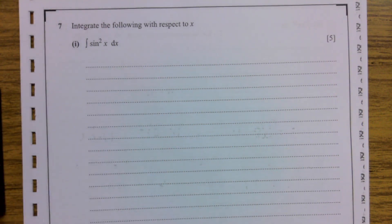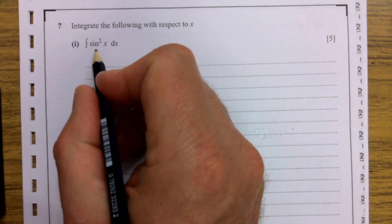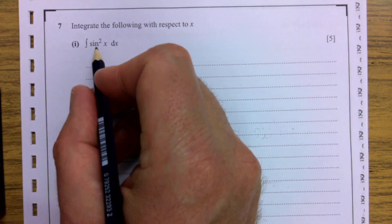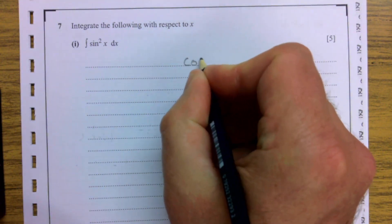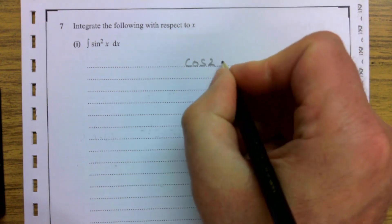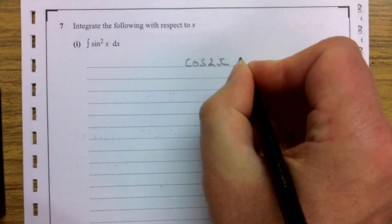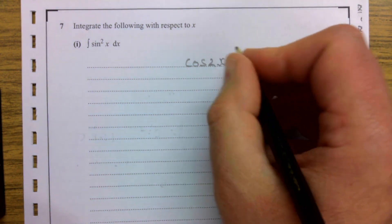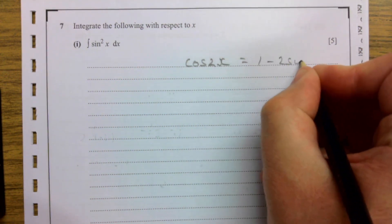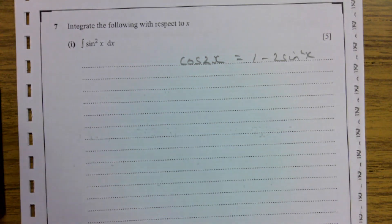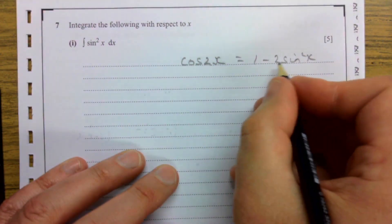You need some sort of cheat to do it, so we're going to use the cos double angle formula and change this around. So let me think what it needs to become. We know that cos 2x equals 1 minus 2 sine squared x.